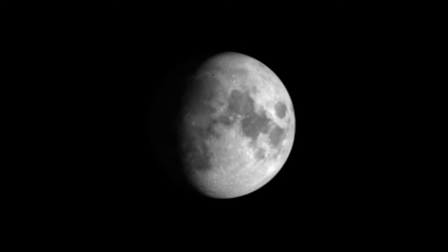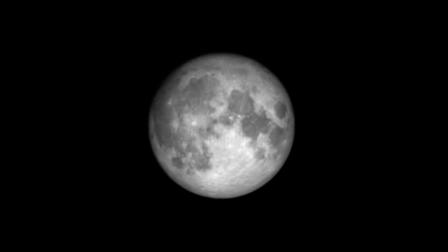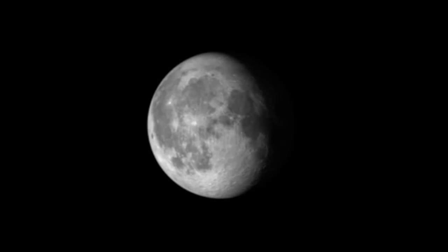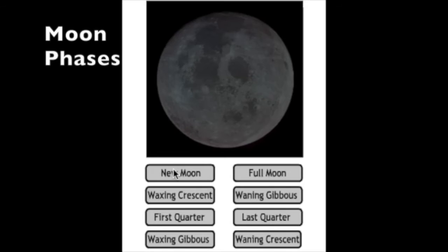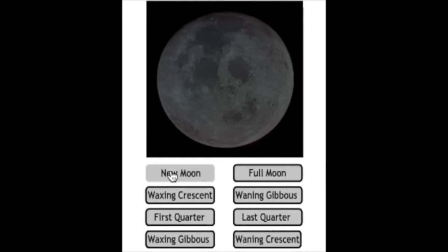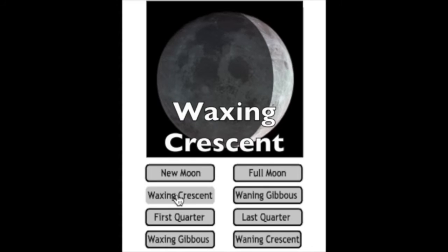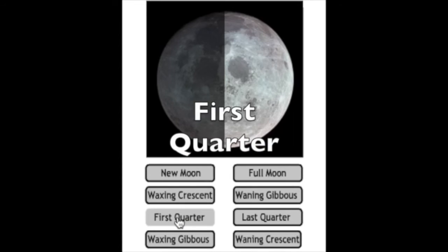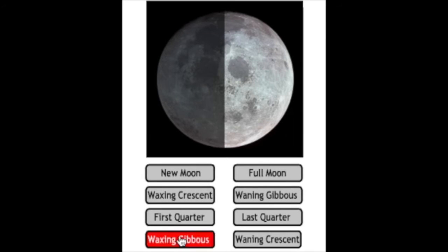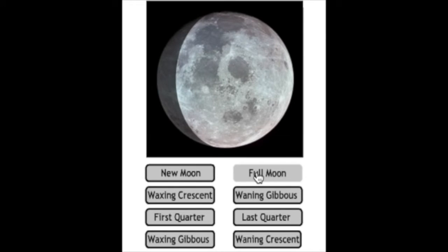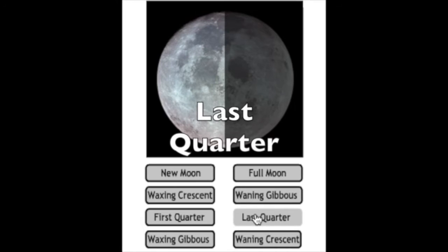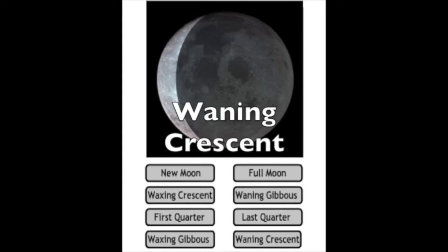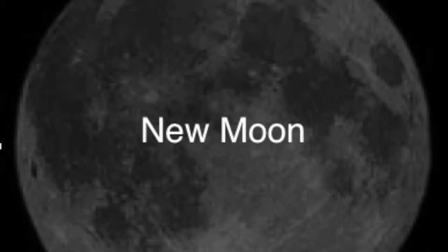We'll start with the new moon and watch as the moon appears to grow or wax until it is full, then decrease or wane to the next new moon. There are eight different benchmarks when it comes to moon phases: new moon, waxing crescent, first quarter, waxing gibbous, full moon, waning gibbous, last quarter, and finally waning crescent before it becomes new moon again. All of this takes about 29 and a half days.